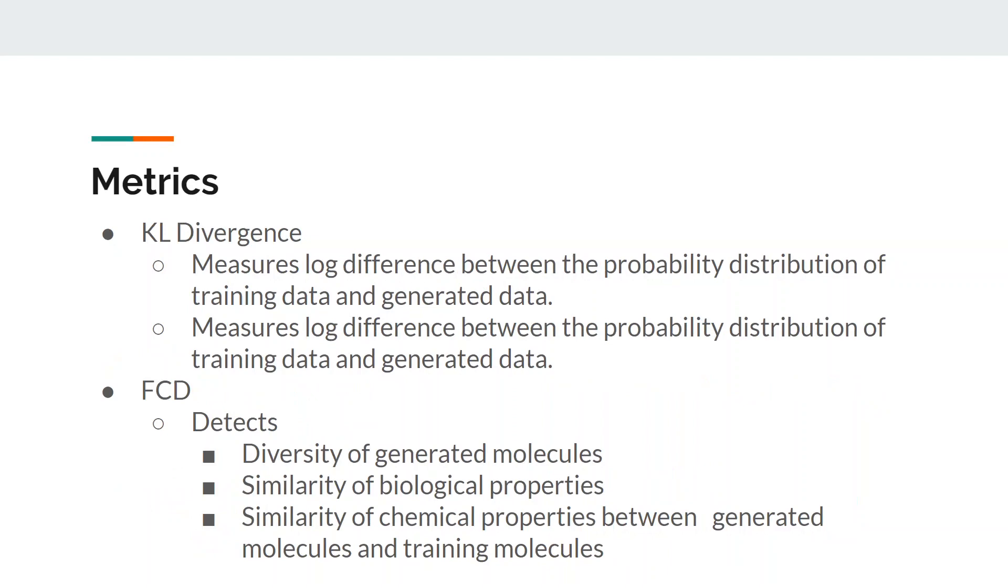KL Divergence calculates the log of the difference between the probability of the data in the original distribution with respect to the approximating distribution. It basically calculates how much information is lost when one distribution is approximated with another. FCD is used to detect the diversity of generated molecules, similarity of biological properties and similarity of chemical properties between the generated molecules and training molecules. A low FCD value indicates that the molecule distributions are similar to each other.